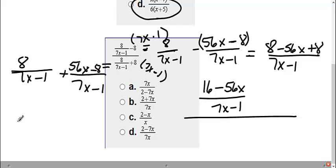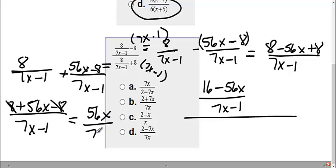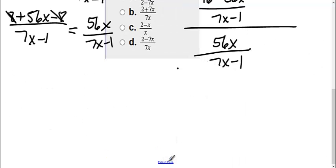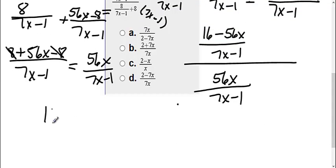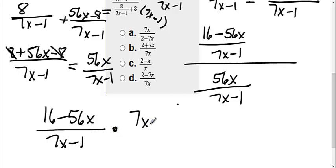Okay, then now that they have the same common denominator, I can combine them. So I get 8 plus 56x minus 8. And then I can simplify it. Positive 8 and negative 8 gives me 56x over 7x minus 1. So now I have my fraction over a fraction. Therefore, now that I have a fraction over a fraction, I can multiply by the reciprocal. So I'm taking the first fraction, 16 minus 56x over 7x minus 1, multiplying by the reciprocal. I need to flip the second one: 7x minus 1 over 56x.